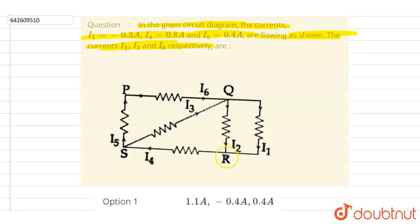So let us do one by one. To get i2, we will apply the Kirchhoff junction law at R. So what equation we will apply to find out the three currents? It is Kirchhoff junction law.